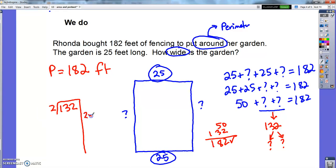132 divided by 2. Let's see. Let's do 2 times 50 is 100. And let's do 2 times 15 is 30. And 2 times 1 is 2. So it looks like 50, 65, 66 would do it. So 66. So if each of these were 66 feet, then 66 plus 25 plus 66 plus 25 would be 182 feet in perimeter.